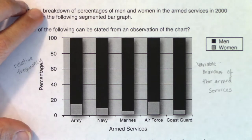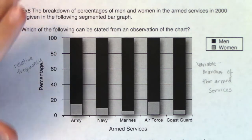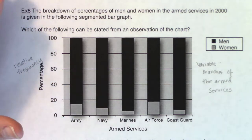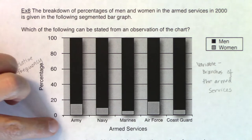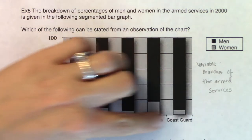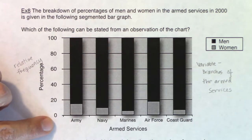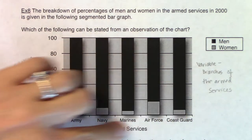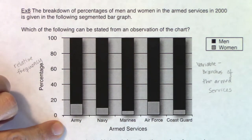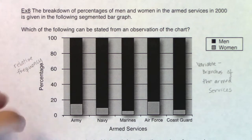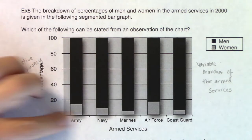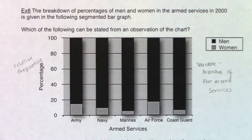Bar charts and histograms look extremely similar — they both have rectangles. We use the term bar chart when the x-axis has a categorical variable, and we use the term histogram when the x-axis has a numerical variable. That's the only difference.